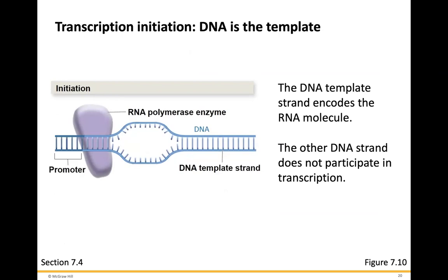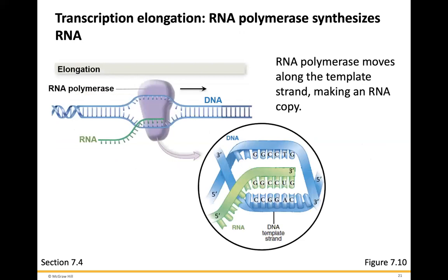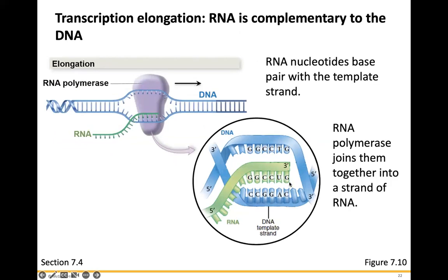DNA is the template. The DNA template strand encodes the RNA molecule; the other strand does not participate in transcription. In the elongation step — the second phase — RNA polymerase synthesizes the RNA strand. RNA polymerase moves along the template strand making an RNA copy. Wherever you have a C, you generate a G; wherever you have a G, a C; wherever you have an A, a U. The RNA nucleotides base pair with the template strand, and RNA polymerase joins them together into a strand of RNA.